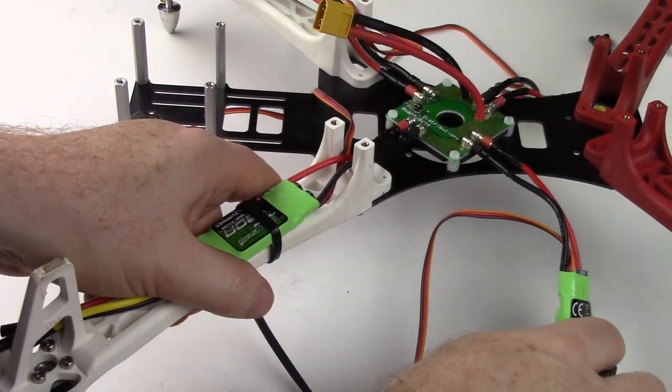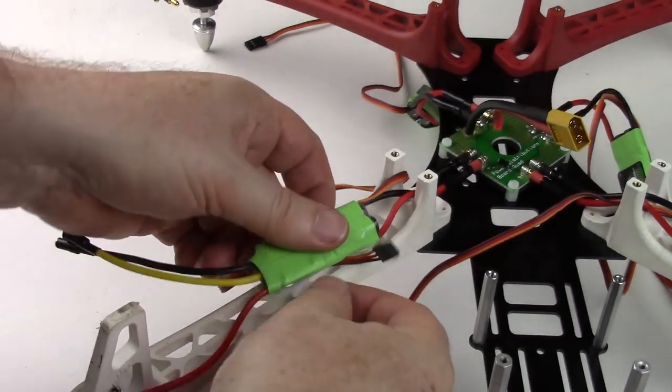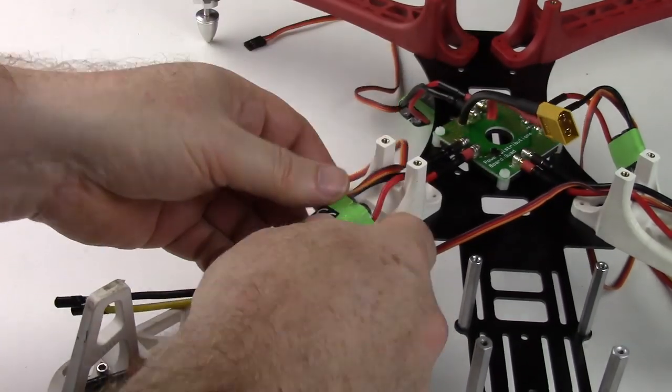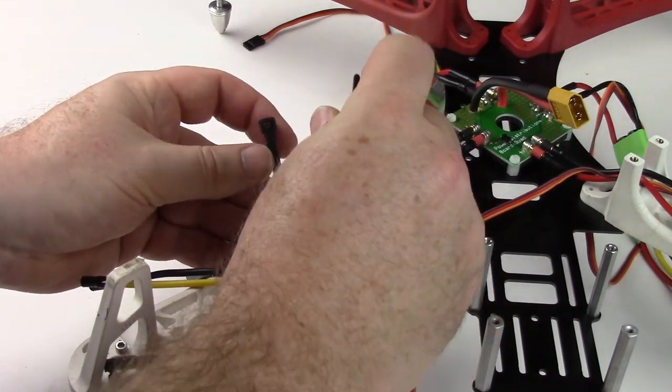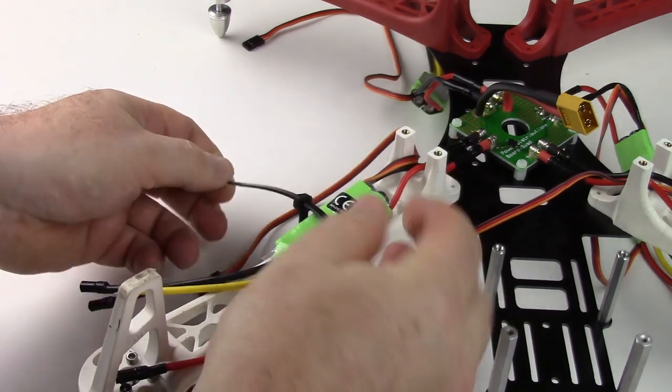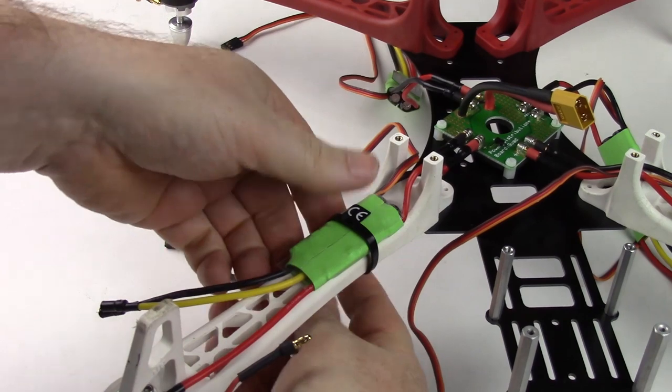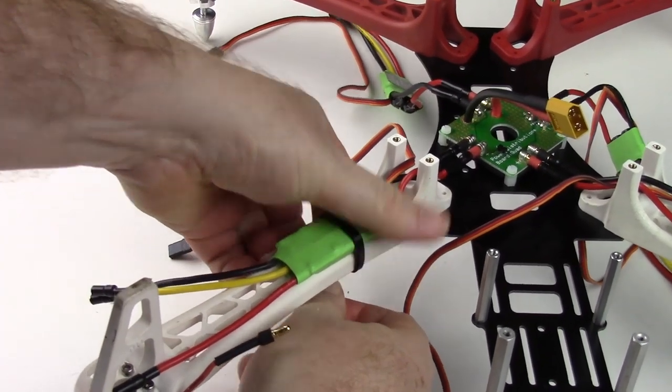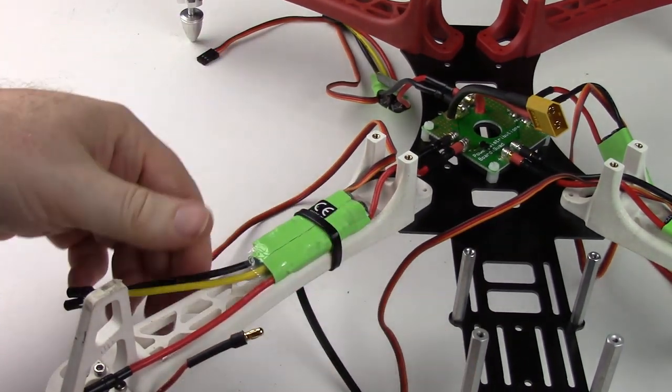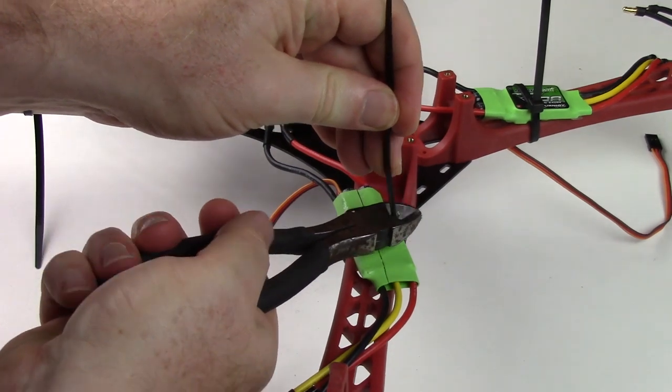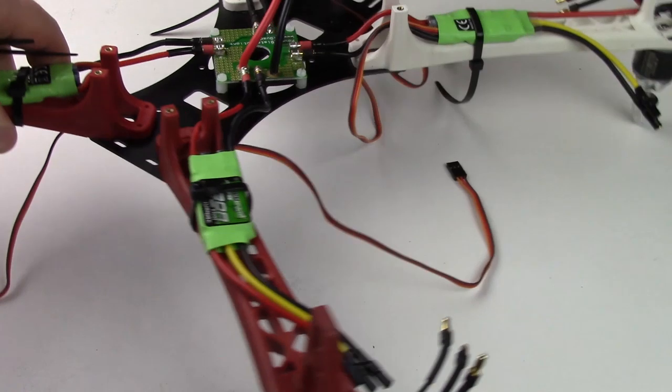That's nice. Do the same thing on the other side, securing the ESC right to the underside of the arm. Now it's an easy task to just go around and snip off the excess zip tie to keep things nice and neat.